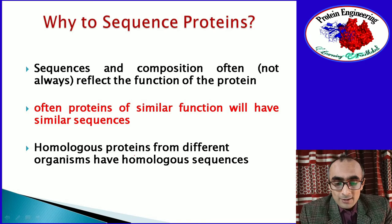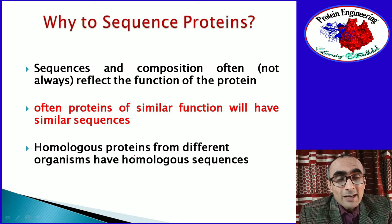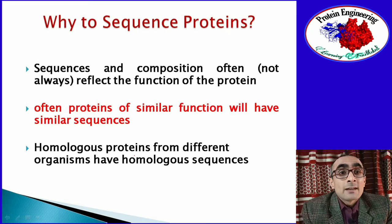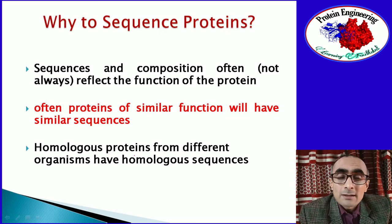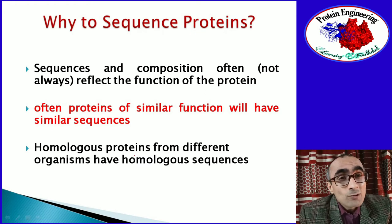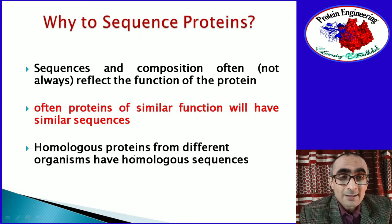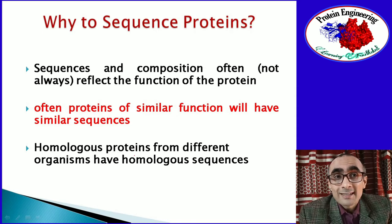If you have homologous proteins from different organisms, those proteins will have similar sequences — homologous sequences — so you can find out the function of the protein from the sequence. But in the case of new or novel proteins, you cannot find out function just from the sequence. This is only possible when you have homologous proteins available and similar protein information in the database, in which case finding the function from sequence comparison is easier.